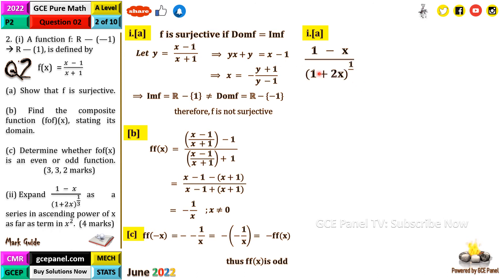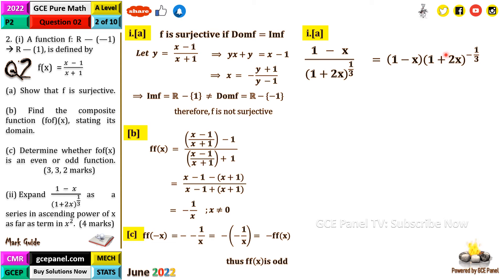[(1 − x)/(1 + 2x)]^(1/3) can first be written as (1 − x) · (1 + 2x)^(−1/3). Now that we have the form with exponent −1/3, we can proceed with the binomial expansion.